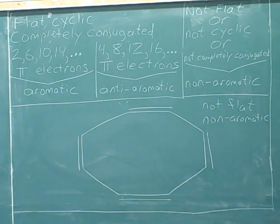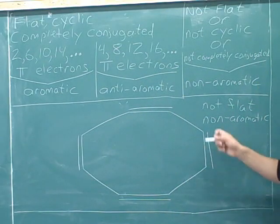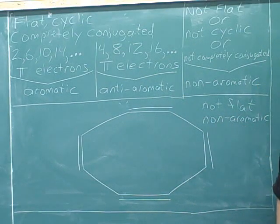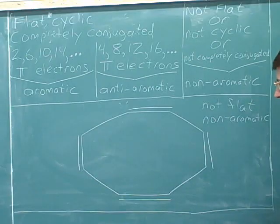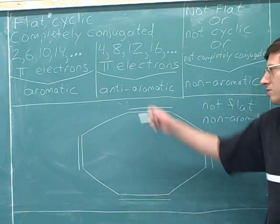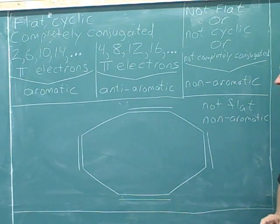Non-aromatic. Because it's not flat, we don't need to even bother counting the number of pi electrons. If something's not flat, we don't count the pi electrons. We just automatically say that it's non-aromatic. If you hadn't realized that this was not flat, you would count that there's one, two, three, four, five, six, eight pi electrons. So at first, it might have seemed to you like this was anti-aromatic. But again, it's not. It's not anti-aromatic. It's non-aromatic because it's not flat.